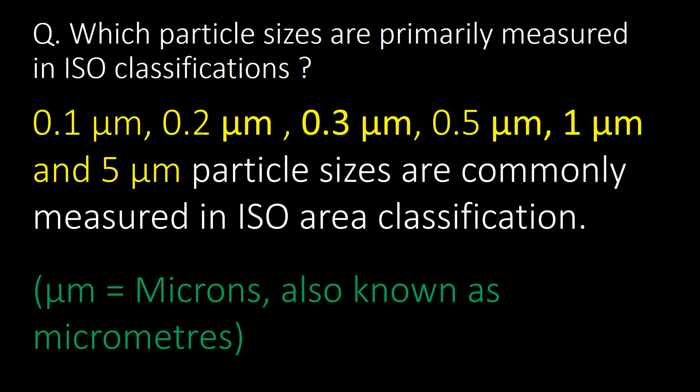Which particle sizes are primarily measured in ISO classifications? 0.1 micron, 0.2 micron, 0.3 micron, 0.5 micron, 1 micron, and 5 micron particle sizes are commonly measured in ISO area classifications. Microns are also known as micrometers — don't get confused between these two terminologies.